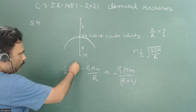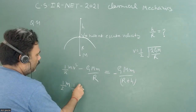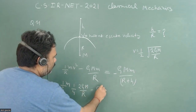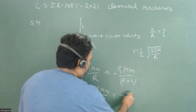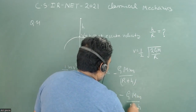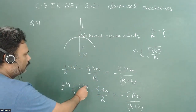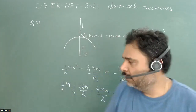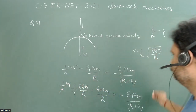Substituting: (1/2)m × v² = (1/2)m × (1/4)(2GM/R) = GMm/(4R). So the equation becomes GMm/(4R) − GMm/R = −GMm/(R+h). The GMm terms cancel throughout, giving a simple algebraic relationship.